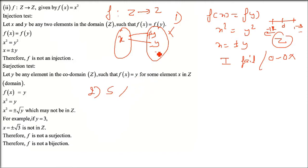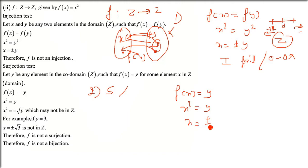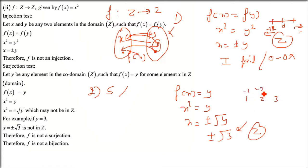Checking surjection for f(x) = x² from ℤ to ℤ: setting x² = y gives x = ±√y. Again, √3 is not an integer - integers are only whole numbers like 1, 2, 3, -1, -2, -3. So surjection fails as well. Since both injection and surjection fail, it is not bijective either.